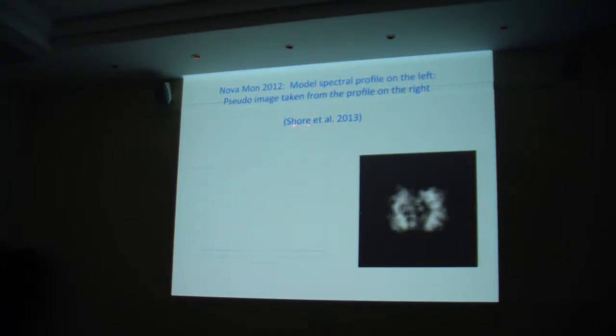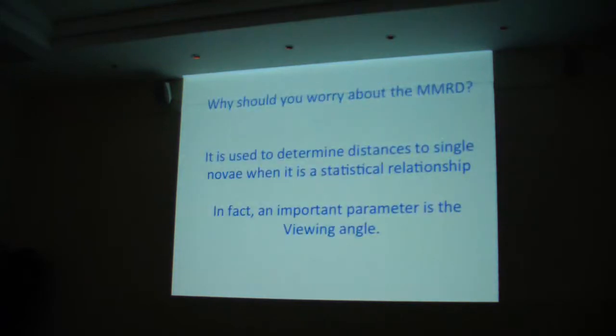This is from a paper that Steve and I published in 2013. Nova Mon 2012. It was actually discovered in gamma rays before we realized it was a nova. And this is a model spectral profile. We have real spectra, I promise you. We take the images, we predict the emissivities as a function of distances. This is in kilometers per second. It doesn't look at all uniform. Now, why did I throw this in? It gives me an opportunity to give a quick and dirty summary of what actually affects the properties of nova outburst.